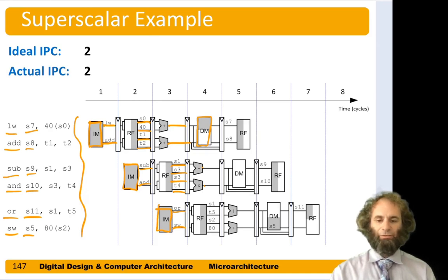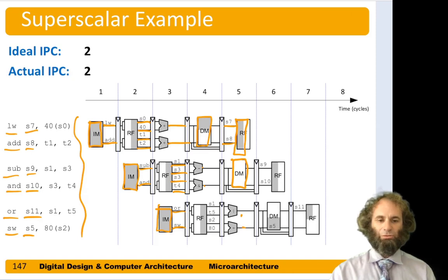On the fifth cycle the register file writes s7 and s8 back for the load and add. The data memory isn't used by subtract or and, and the ALU is doing or and add for the or and store instructions. So here we're issuing two instructions every cycle, giving us an instructions-per-cycle (IPC) of two.